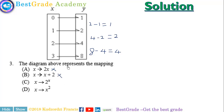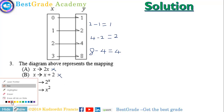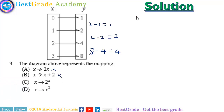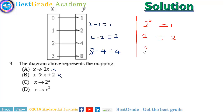So options A and B are out. We check for option C. We have: 2 to the power 0 gives us 1; 2 to the power 1 gives us 2; 2 to the power 2 gives us 4; and 2 to the power 3 gives us 8.